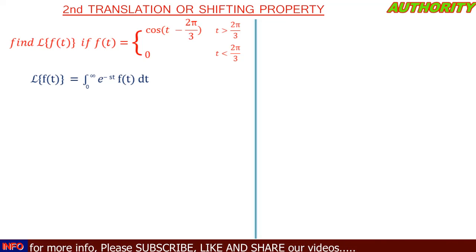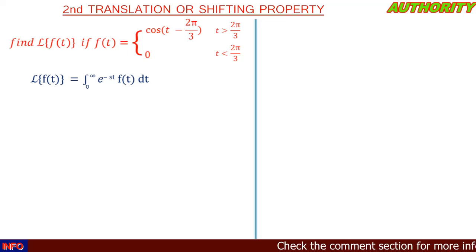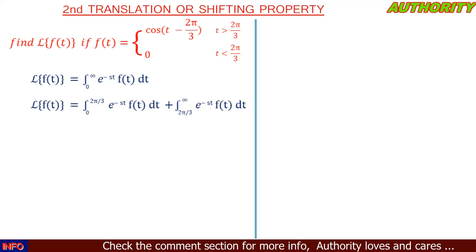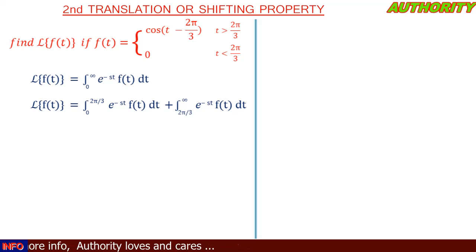Our function runs from zero to infinity, but there is a breakpoint at 2π/3. So we split it: from zero to 2π/3, and from 2π/3 to infinity. That means the Laplace transform of f(t) equals the integral from zero to 2π/3 of e^(−st) f(t) dt, plus the integral from 2π/3 to infinity of e^(−st) f(t) dt.